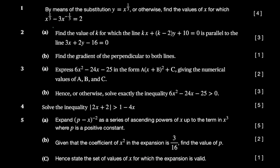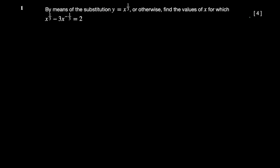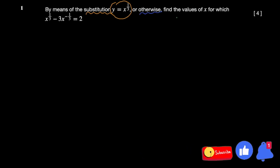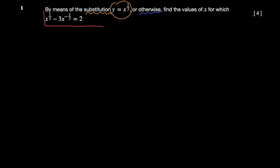In this video I'm going to show you how to work out problem one in the June 2020 ZIMSEC A-Level paper. The question says: by means of substitution — you're given a guideline to use substitution, with the key substitution y = x^(1/3). They also say 'or otherwise', meaning you can use any other method. The problem is: x^(1/3) minus x^(-1/3) equals two.